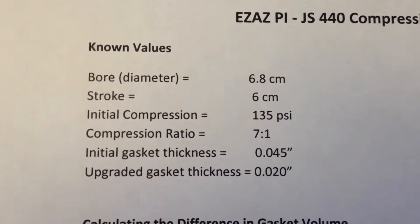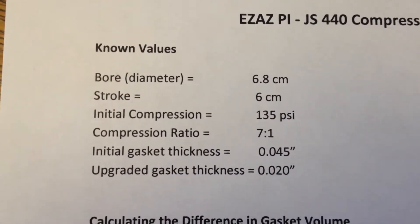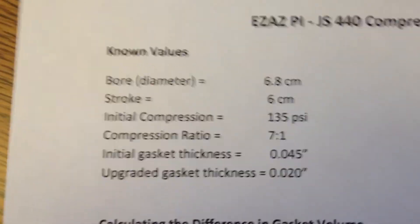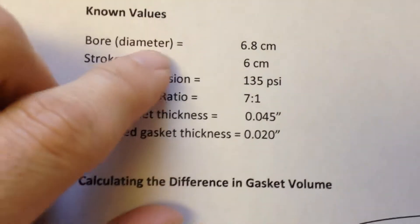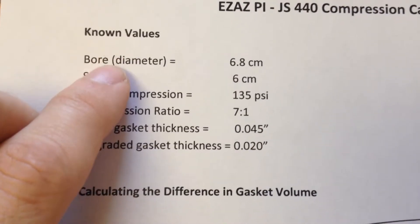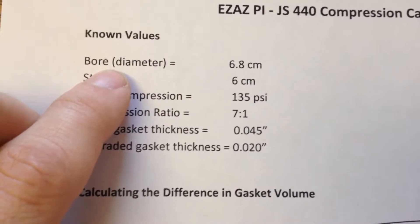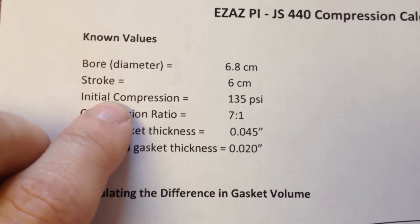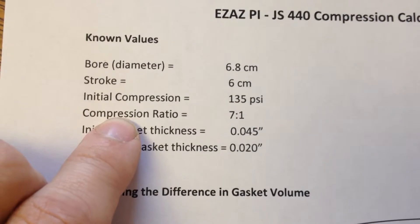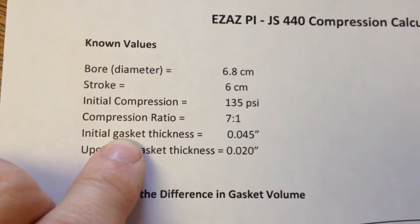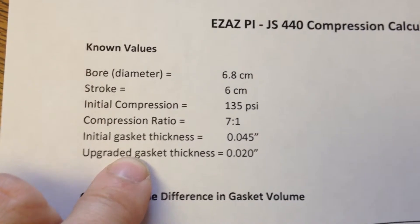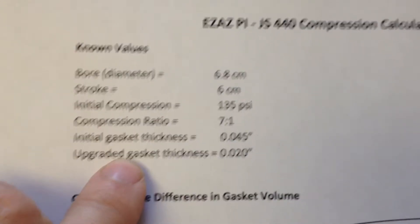For this video I would like to focus on the Kawasaki JS440 stand-up jet ski and for this particular machine there are some known values that we'll be using. So the bore is 68 millimeters or 6.8 centimeters stroke. This is my initial compression. This is the stock compression ratio. The initial gasket thickness that I'll be starting with and then the new copper gasket that I'll be putting in this jet ski.